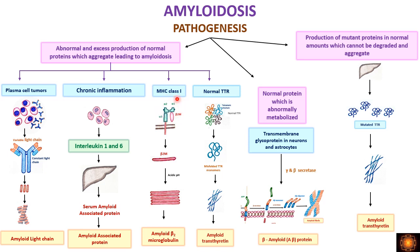Beta-2 microglobulin is normally filtered from the serum, but in patients undergoing long-term dialysis it cannot be filtered, so levels increase in the blood and the protein gets deposited in different parts. This protein can form polymers under acidic pH, or proteolysis produces a component of beta-2 microglobulin that can also polymerize, giving rise to amyloid beta-2 microglobulin.